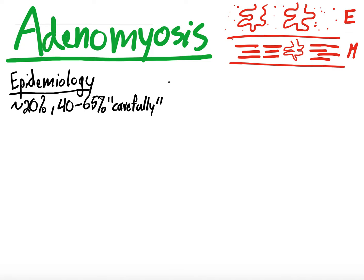So maybe 20%, maybe more, maybe less — it's tough to say. The majority of cases are diagnosed between 30 to 40 years old, which is when you start thinking about adenomyosis as a cause of abnormal uterine bleeding. There's not a lot more epidemiology here just because of the challenging diagnosis.